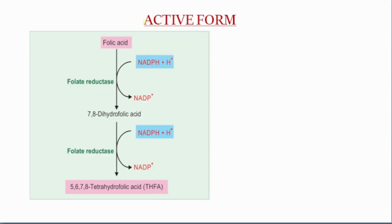Next is the active form of folic acid. Folic acid is converted into dihydrofolic acid, and then dihydrofolic acid is converted to tetrahydrofolic acid. The enzyme is folate reductase, and both reactions require NADPH. So the active form of folic acid is tetrahydrofolic acid.